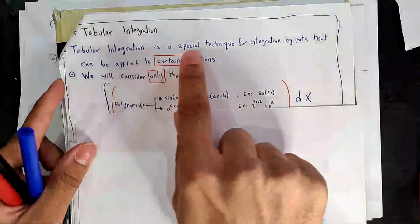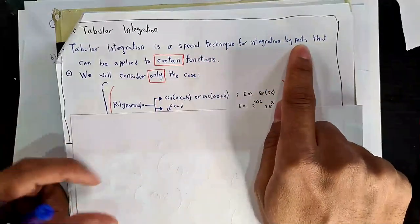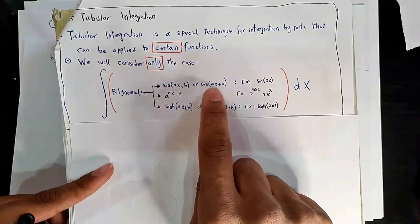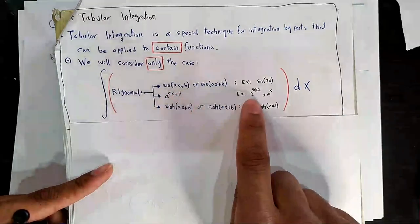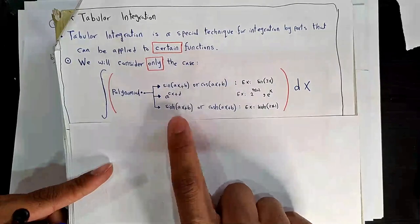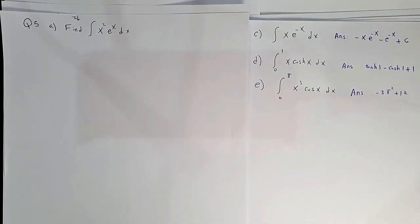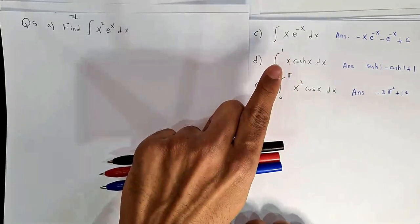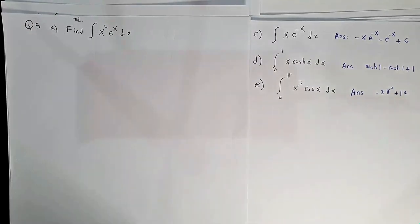Tabular integration is a special technique for integration by parts — not a new method, just a shortcut. It applies when you have a polynomial times one of the following: sin(ax+b), cos(ax+b), exponential aᶜˣ⁺ᵈ, sinh(ax+b), or cosh(ax+b). You set up a table with derivatives on the left (the polynomial) and integrals on the right, alternating plus/minus signs.